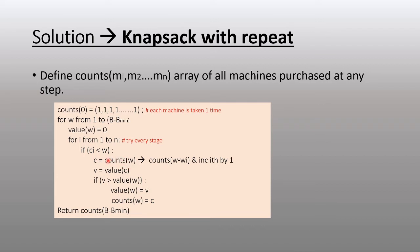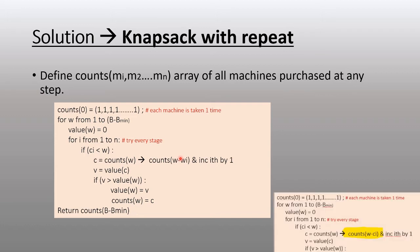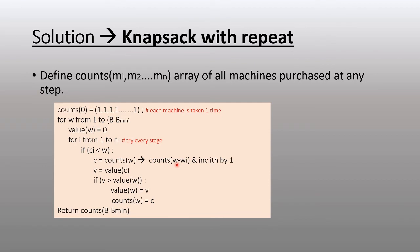...then we subtract from our current budget the cost of that machine. Instead of wi, this should be ci. So from this budget, we reduce it by cost ci. If we can get the optimal count for w minus ci, then we can increment the ith column by one and get the count for w.